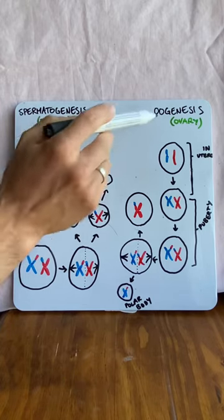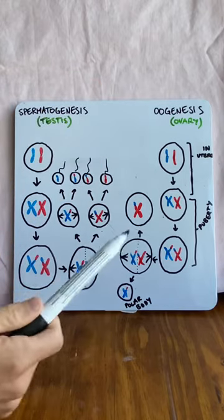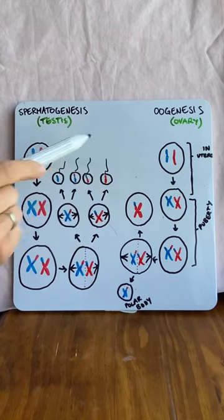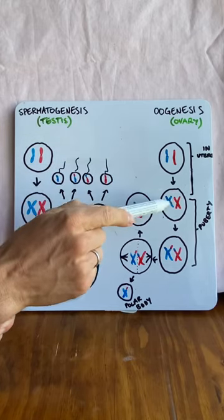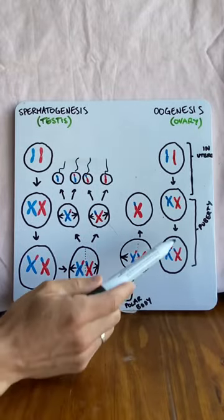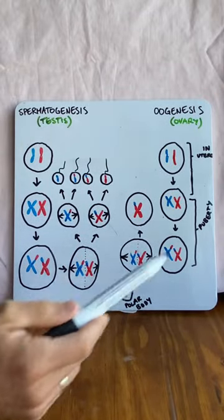When we look at oogenesis for females, this process doesn't begin at puberty, but in utero. So the two chromosomes will double its genetic material in utero when that individual is in their mother's uterus, and then it pauses until they hit puberty.